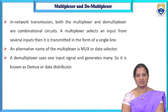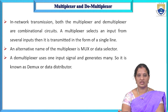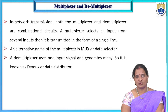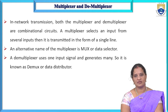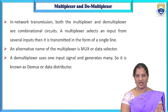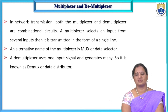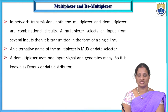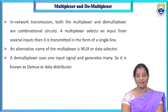A multiplexer, in short, is called a MUX and is also called a data selector because among a number of inputs, we are selecting any one input and sending it to the single output line. A demultiplexer performs the reverse operation of a multiplexer. Whereas in a multiplexer we have several inputs and one output, in a demultiplexer we have only one input and so many destinations. Among the destinations we need to select any one destination, and that single input is sent to that particular selected output line. A demultiplexer uses one input signal and generates many output signals.